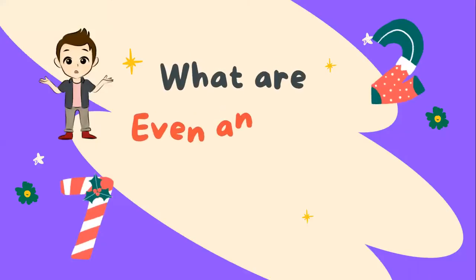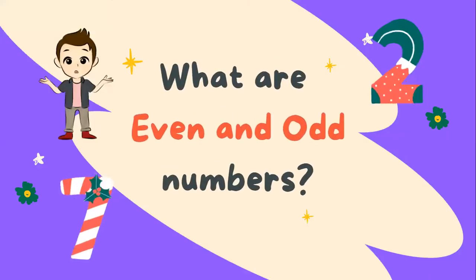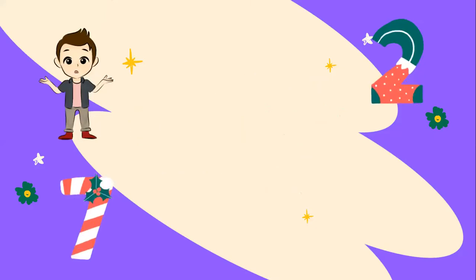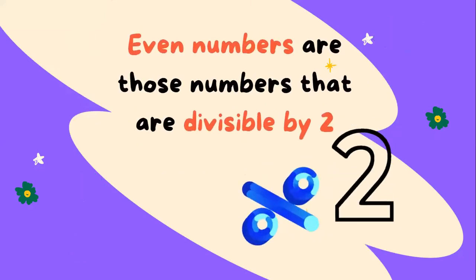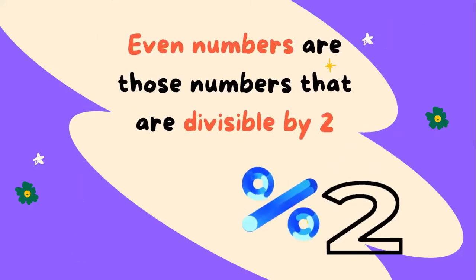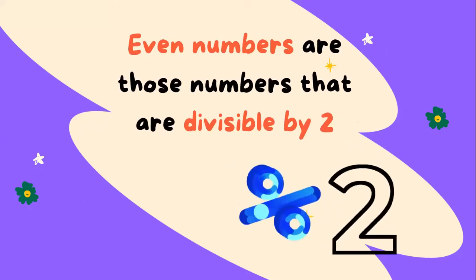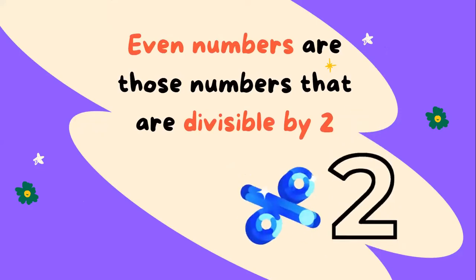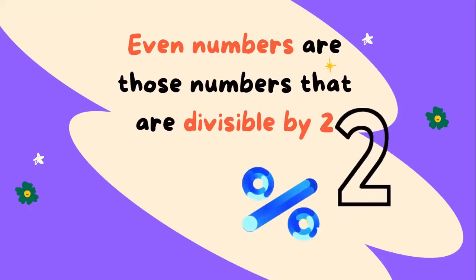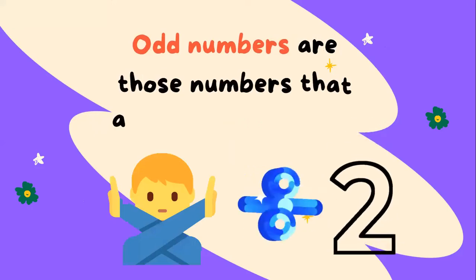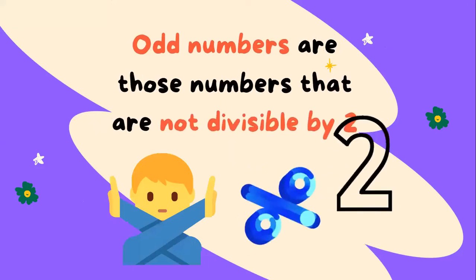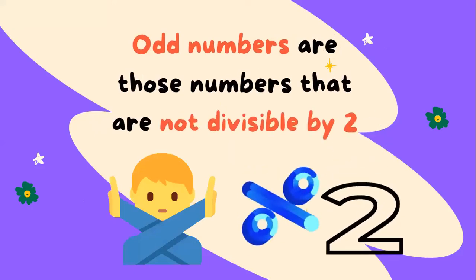What are even and odd numbers? Even numbers are those numbers that are divisible by two. Odd numbers are those numbers that are not divisible by two.